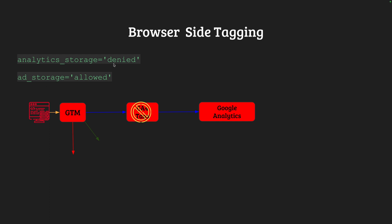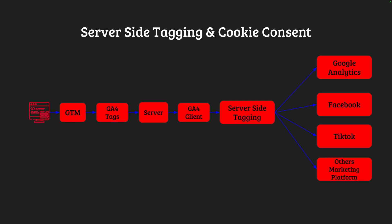If your settings have analytics storage denied but ad storage allowed, any analytics-related GA4 tag will not fire in our setup, but other platforms like Facebook, TikTok, or any other platform including Google Ads tags should fire perfectly because everything is sending from GTM. But if we go to server-side tagging, it is something different.